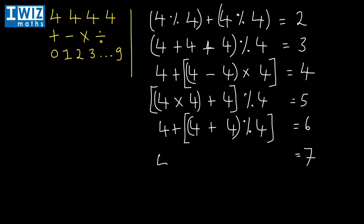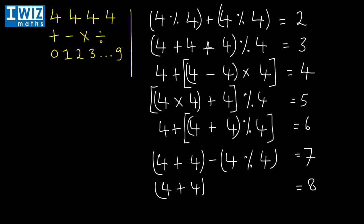To get to seven: seven is eight minus one. Four plus four gives eight, and four divided by four gives one, so eight minus one equals seven. To get to eight: four plus four is already eight, so we subtract four minus four, which is zero. Eight minus zero is eight — or equivalently eight plus zero is also eight.